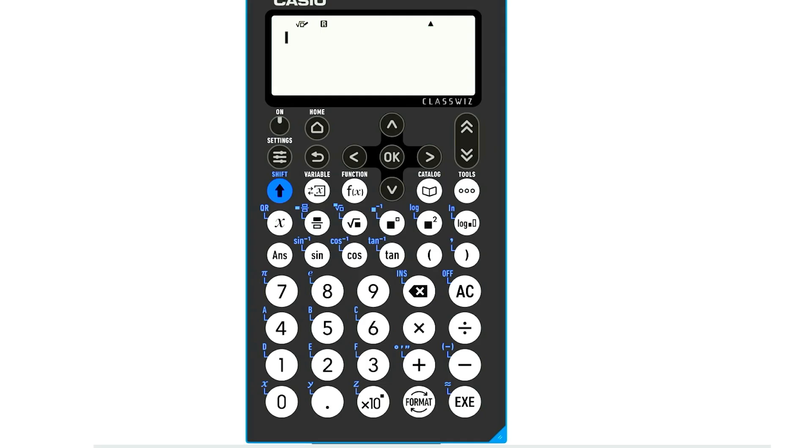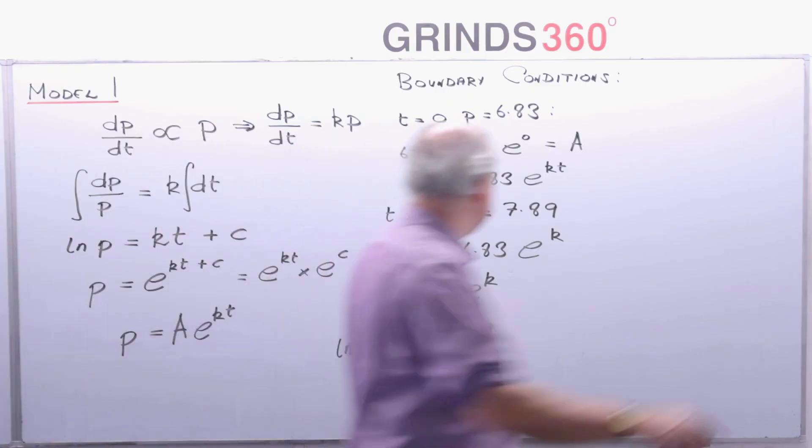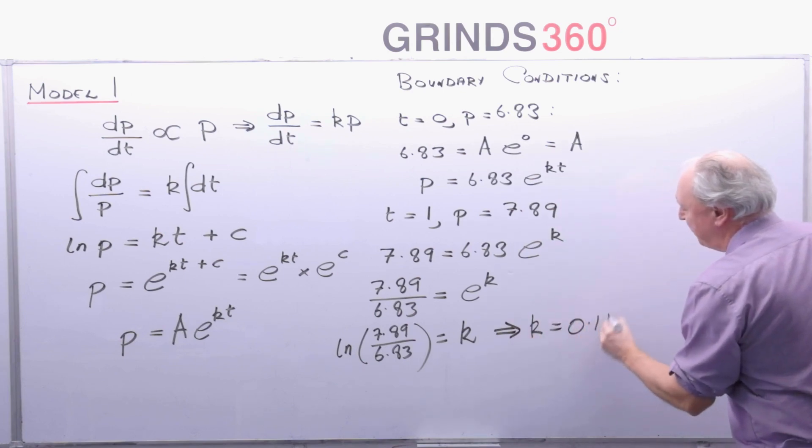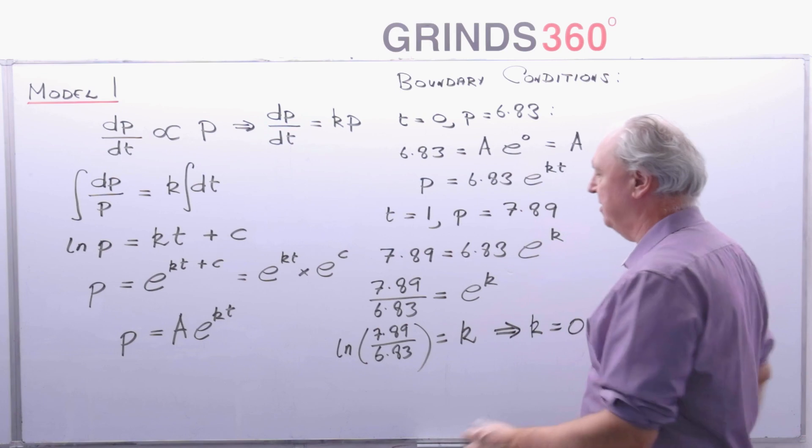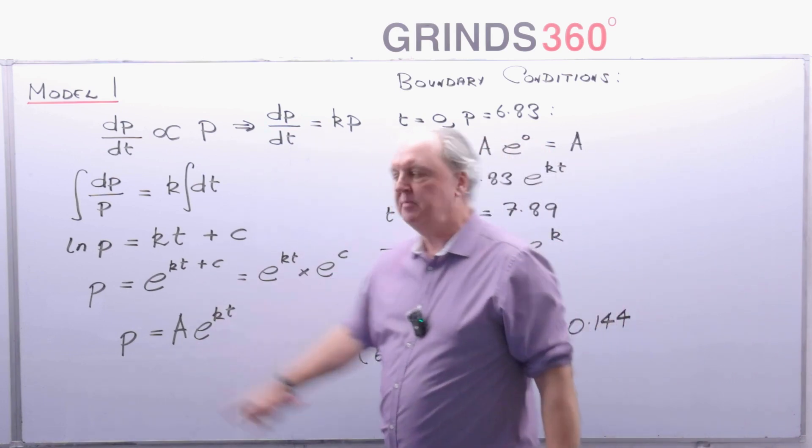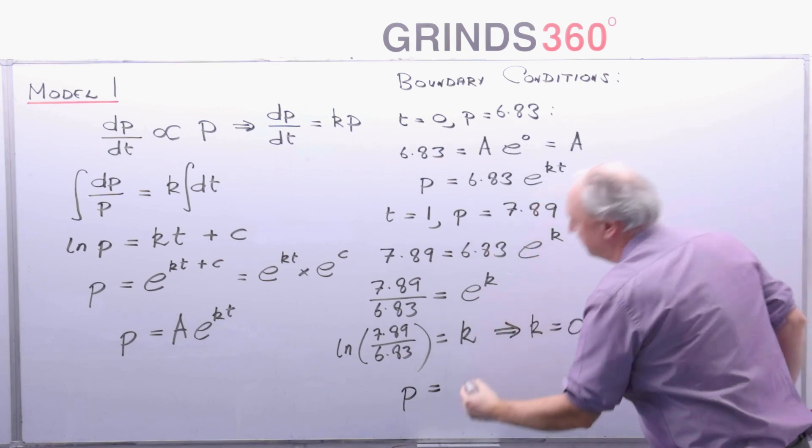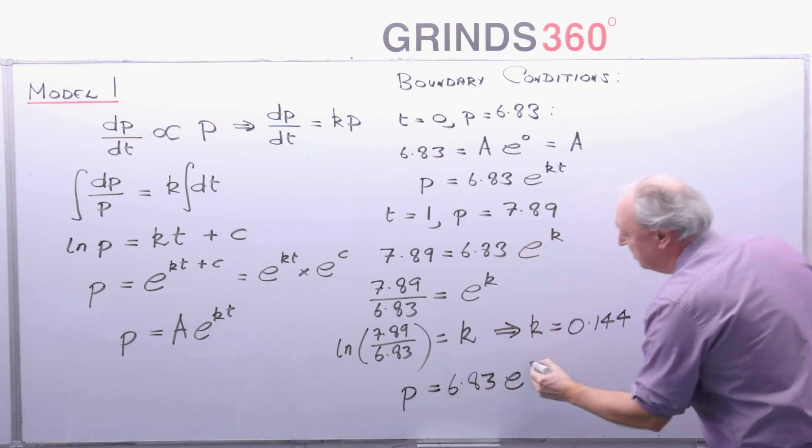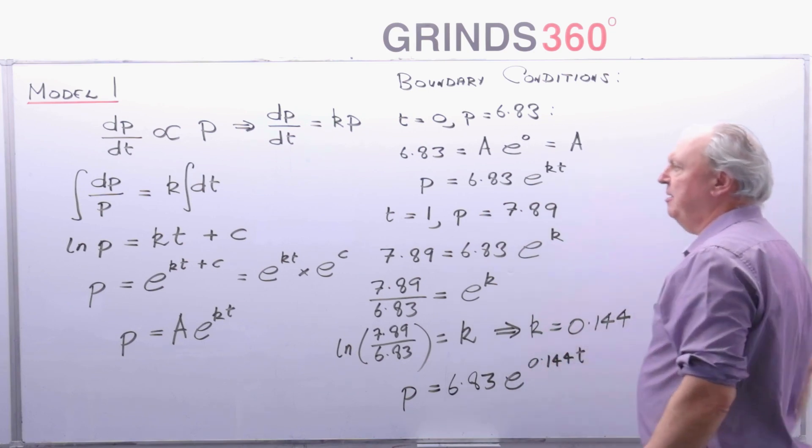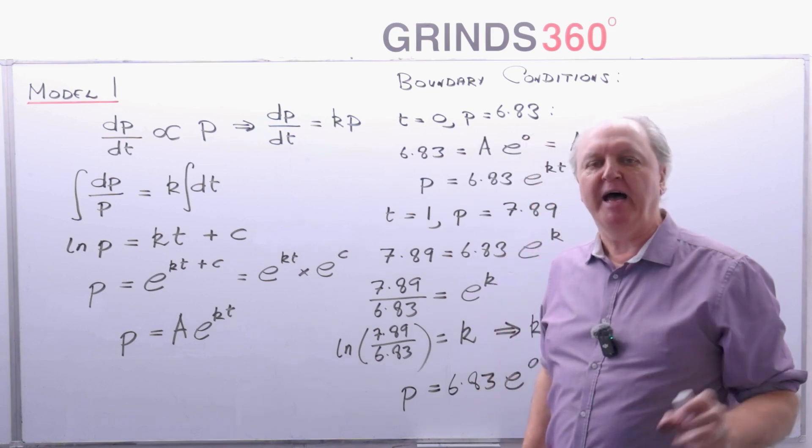So let me go to the calculator and work out that value of k. Execute. And I get a value of, let's go to three decimal places, 0.144. So therefore, my value of k is equal to 0.144. So now you have your full solution for p. p is equal to 6.83 e to the power of 0.144t. But there's my formula that I'm going to use to predict future populations.